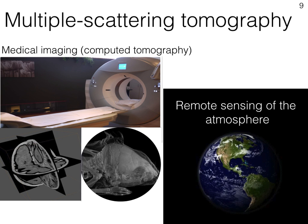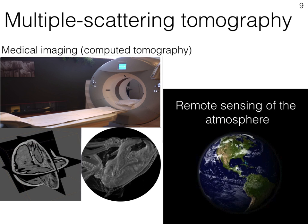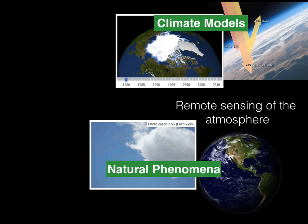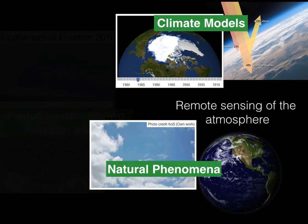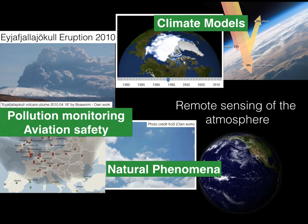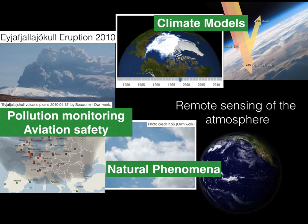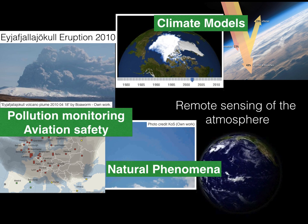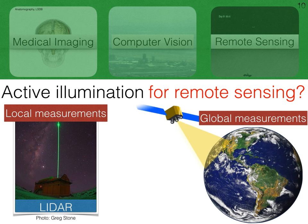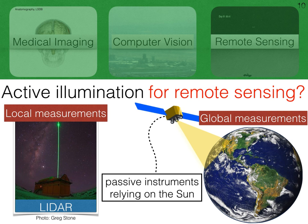We define and solve multi-scattering tomography. We focus on the atmosphere because this can give insights into nature and climate. It's also very important for pollution monitoring and aviation safety — you may remember the Icelandic eruption that caused Europe's airports to shut down. Now, active illumination can be used for remote sensing, however this gives local measurements. We on the other hand seek global measurements, which is why we use passive instruments relying on the sun as the radiation source.